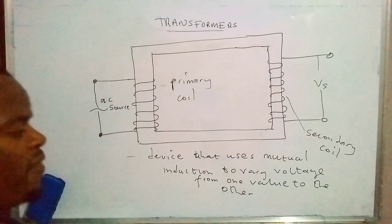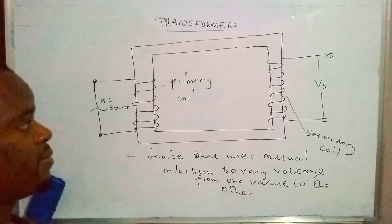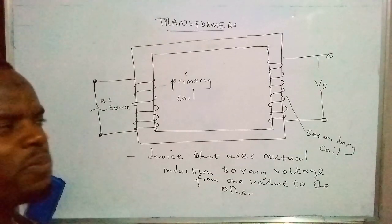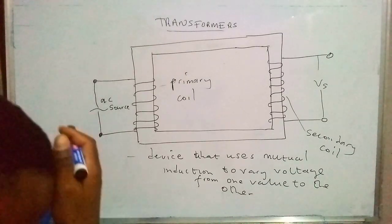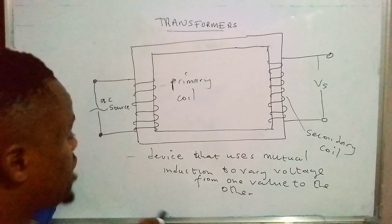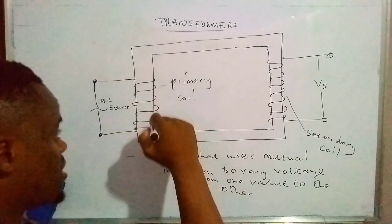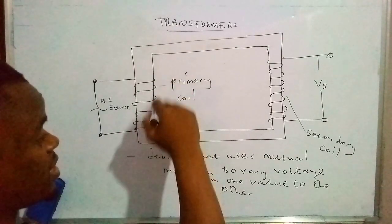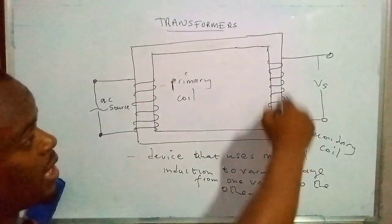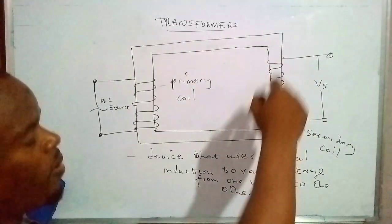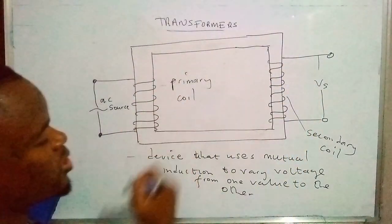You may have the question: what is mutual induction? Mutual induction is simply the effect caused when a changing current in a coil induces an electromotive force in the neighboring coil — the coil which is actually closer to this coil.